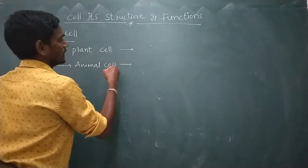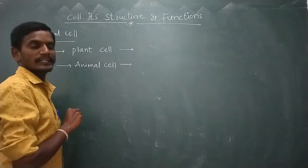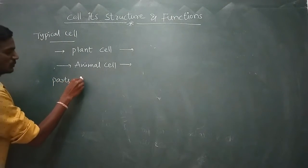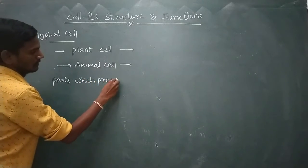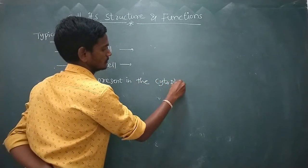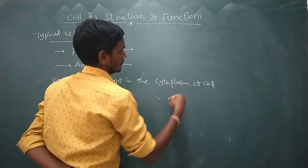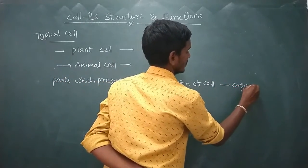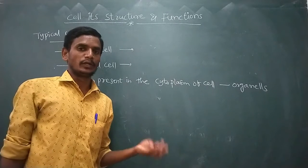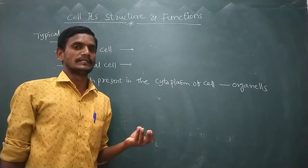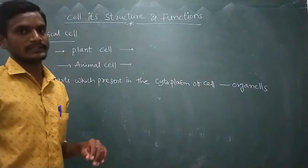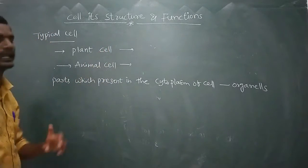Scientists identified plant cells and animal cells and noted down the organelles. The parts present in the cytoplasm of the cell are called cell organelles. They are mitochondria, endoplasmic reticulum, nucleus, ribosomes, lysosomes, and chloroplasts. These all are the organelles, and scientists compared the plant cell and animal cell.